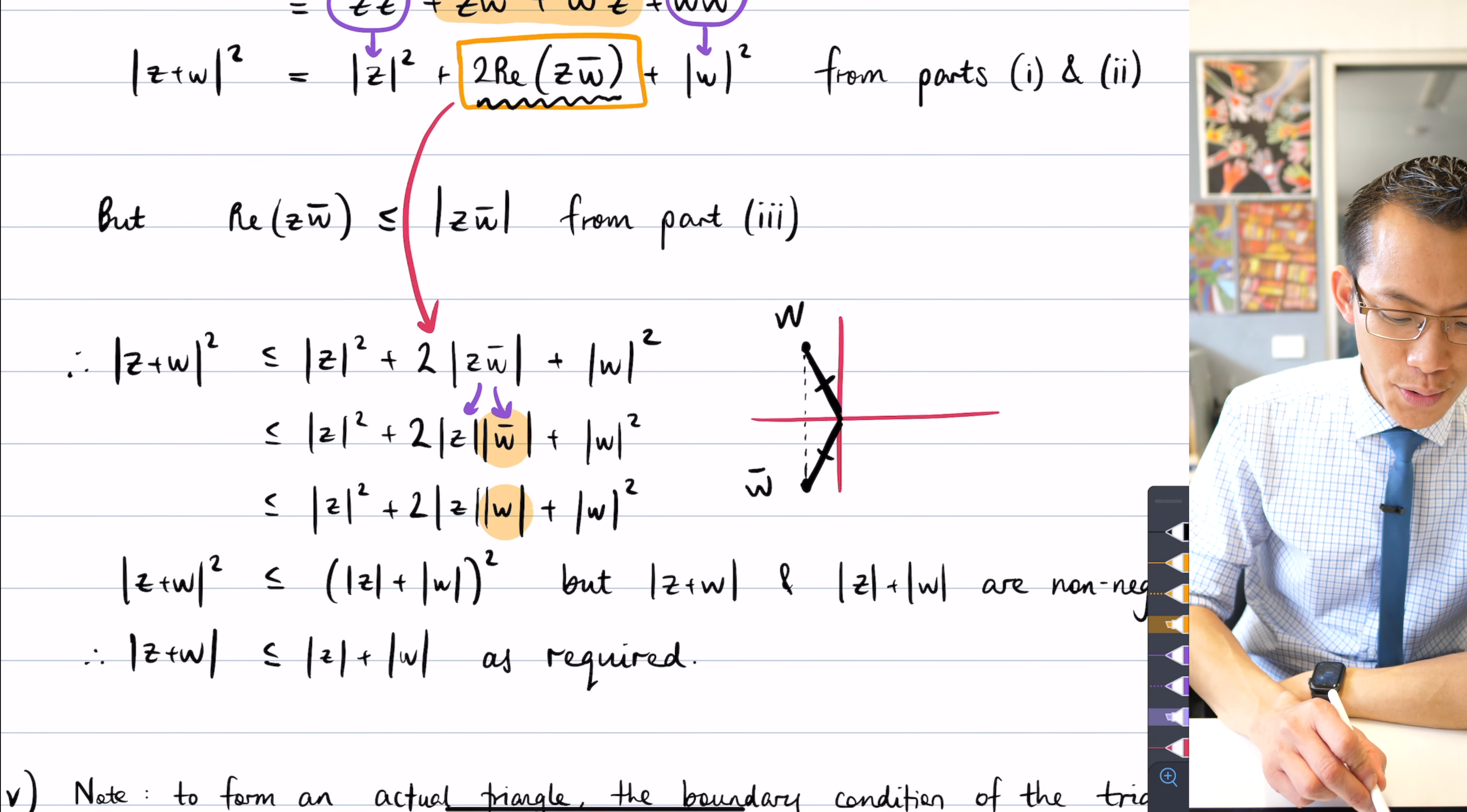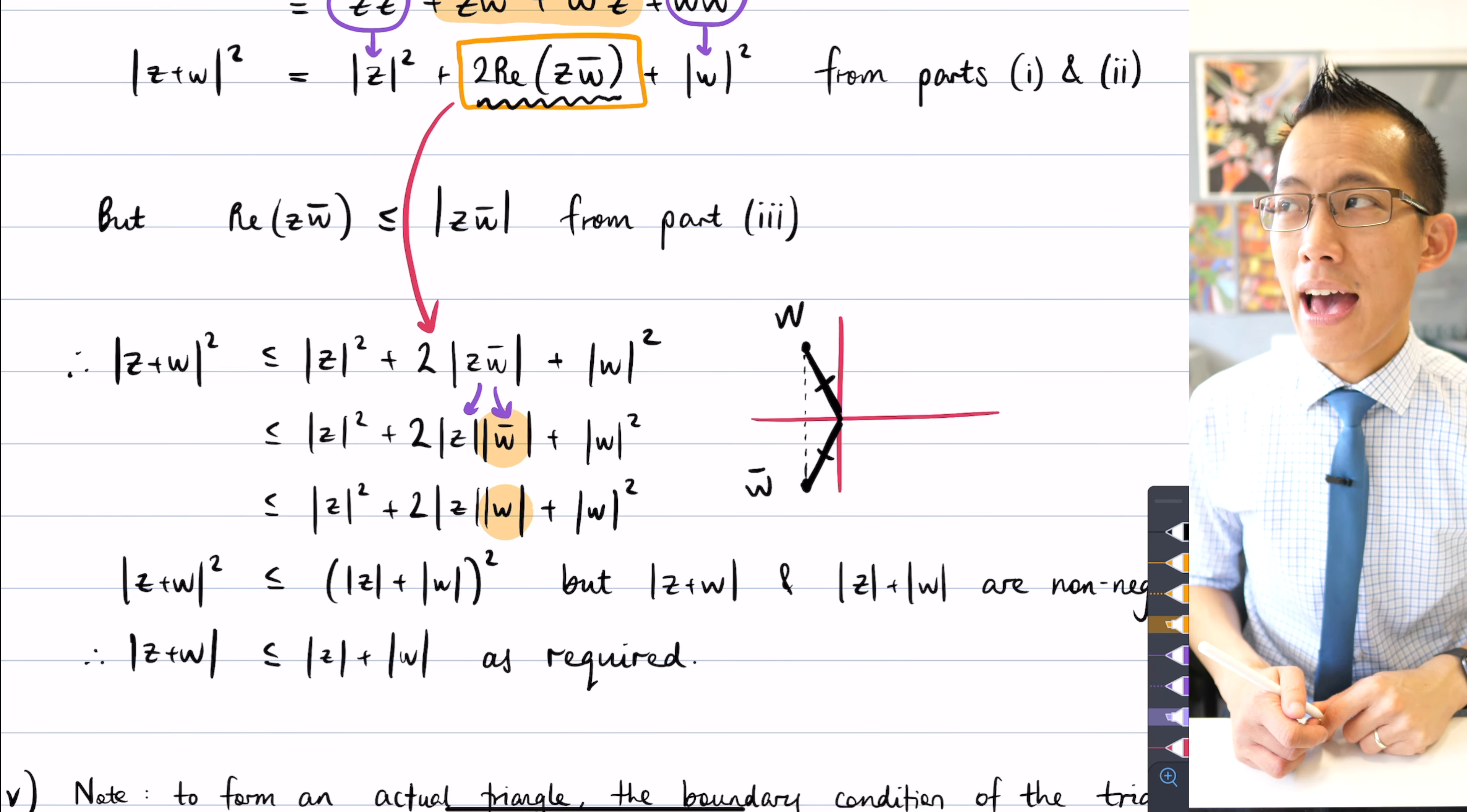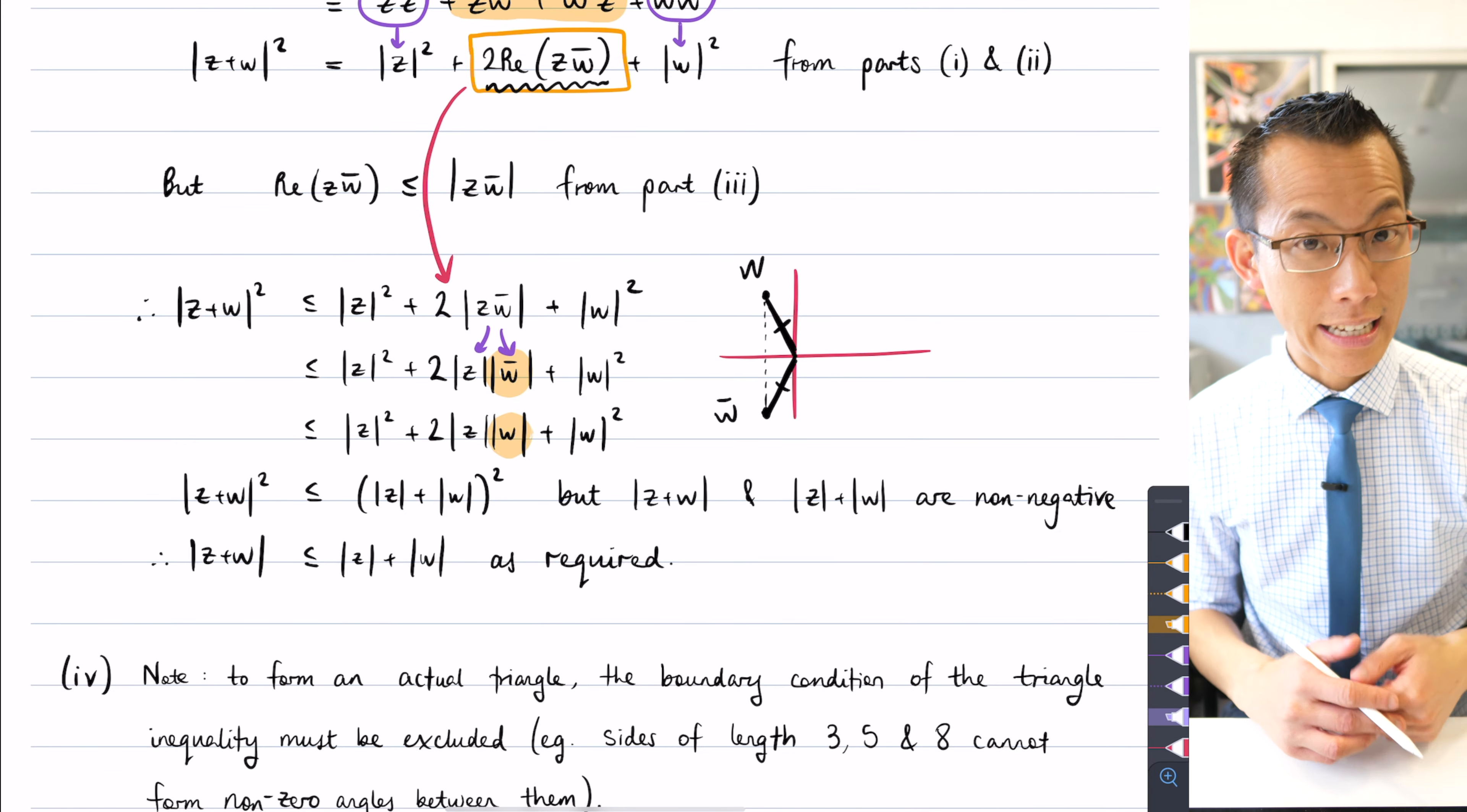And what I've done here beautifully is I've created a perfect square. Do you see that? This is in the form a squared plus 2ab plus b squared. Perfect square. It's just that the a's and the b's happen to be the moduli of complex numbers. So this here is a plus b all squared. But instead of a and b, I've got mod z and mod w. Now we're so close. I mean, you can see my final line already here. It is the triangle inequality.